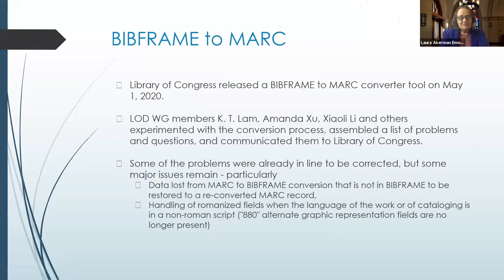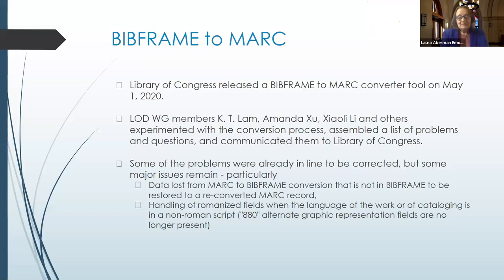The product became able to convert MARC records in Alma to BibFrame, display that BibFrame in the Alma editor, and make it available for publishing or via APIs. Today, Ex Libris has on their roadmap a native BibFrame editor in Alma. The Library of Congress has also released a BibFrame-to-MARC converter tool, which the working group has reviewed. Some problems were already in line to be corrected, but major issues remain — particularly data lost from the MARC-to-BibFrame conversion that the Library of Congress didn't think they needed to convert.